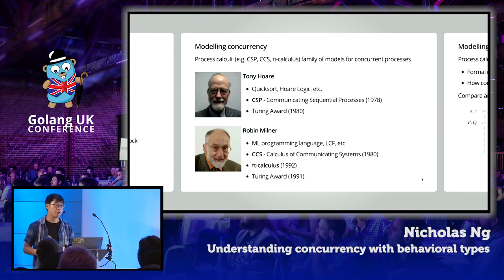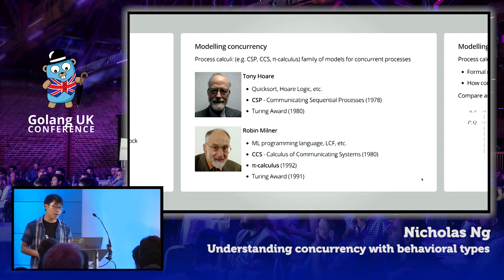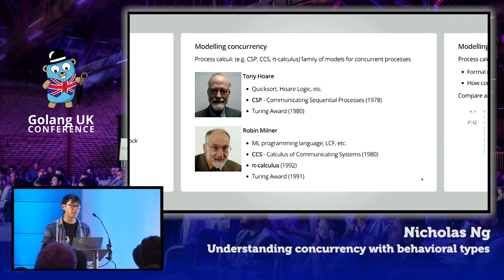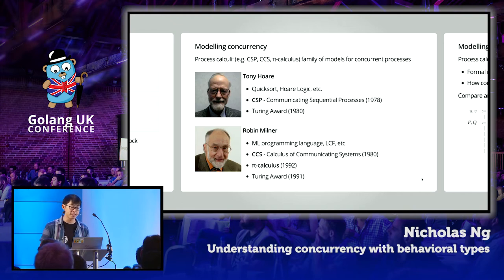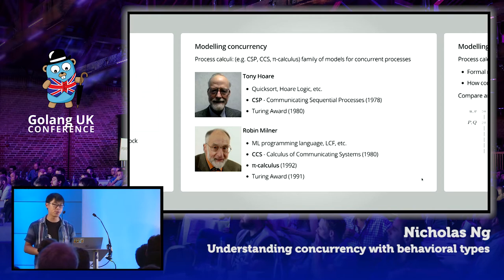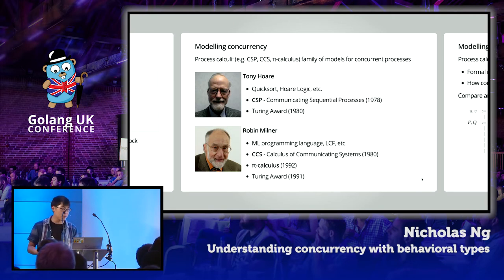Two of the most famous British computer scientists who received Turing Awards both worked on process calculi: Sir Tony Hoare worked on CSP — communicating sequential processes — in the 1970s, and Professor Robin Milner developed CCS (calculus of communicating systems) and pi calculus. Importantly, CSP is also the original inspiration for Go's concurrency model, so it's almost natural that we use process calculi to model concurrency in Go.